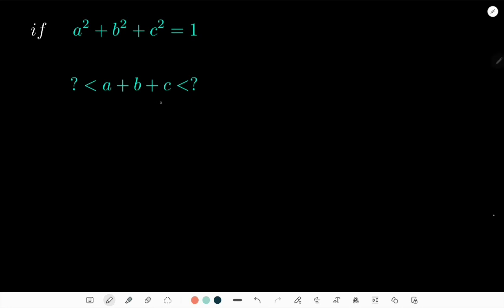We call the expression here as S. So if we have S as a plus b plus c, then S squared is a plus b plus c to the power of two.